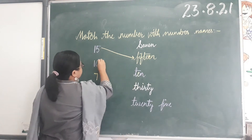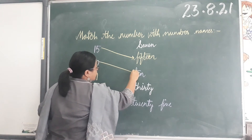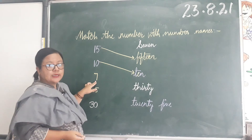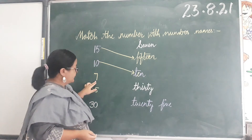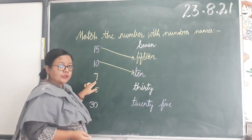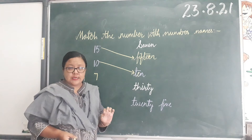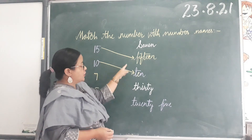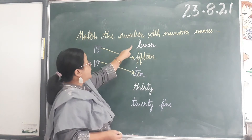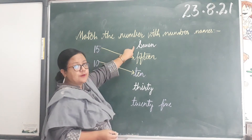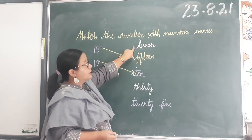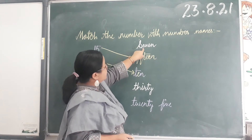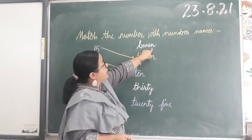Now what number is this? Seven. How do you spell seven? S, E, V, E, N - seven. So let's find out where is seven. Is this seven? Yes. Let's spell it - S, E, V, E, N - seven. This is the right answer.